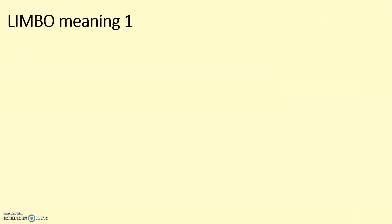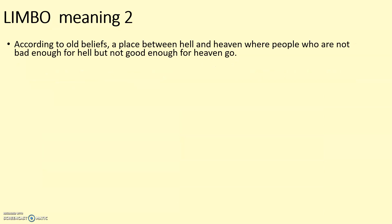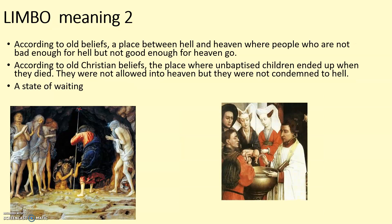Limbo — still part of your notes here. Meaning number one: it's a rhythmic dance where you have to bend beneath a pole by bending backwards with a straight back as straight as you can. It's thought that it was invented by slaves on the ships, with the bars they go under almost linked to the iron bars they were chained to, keeping themselves fit and supple in those horrible conditions. But there is a second meaning to limbo: according to old beliefs, a place between heaven and hell — that's the word purgatory you looked up earlier — and also, to be 'in limbo' is a state of waiting for something to happen, which applies to these people on the ship in the poem we're about to read.